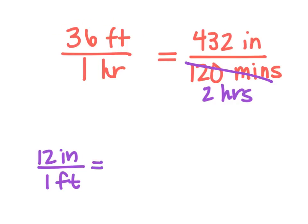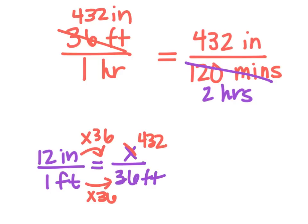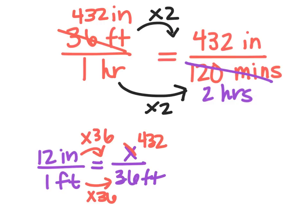If I'm not sure how to convert, I can set up a proportion. I know there are 12 inches in a foot, but I have 36 feet — I want to know how many inches that is, so I'll put X here. Going across from 1 to 36, that's times 36. So 12 times 36 is 432. So 36 feet is the same as 432 inches. Now to test if these are equal: from 1 hour to 2 hours, that's double. So the inches should also be double. But 432 and 432 — it's not double. So these two rates are not equivalent.